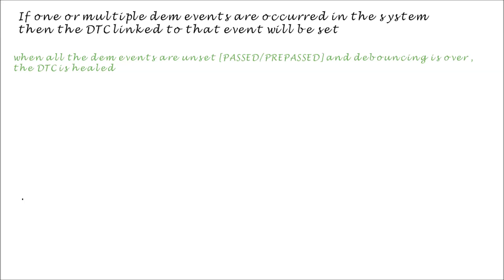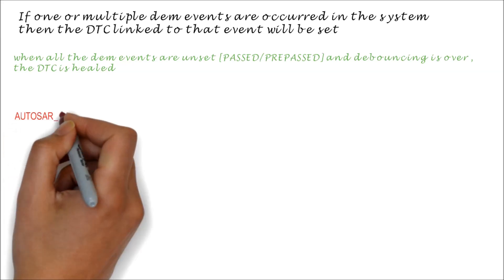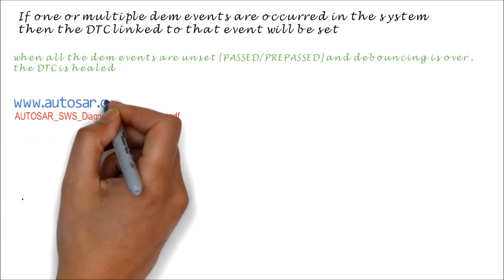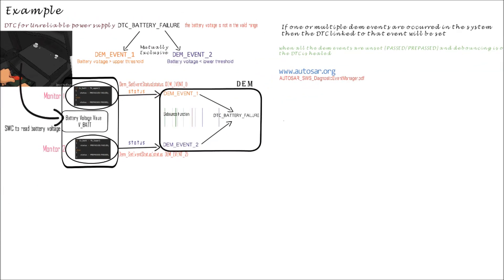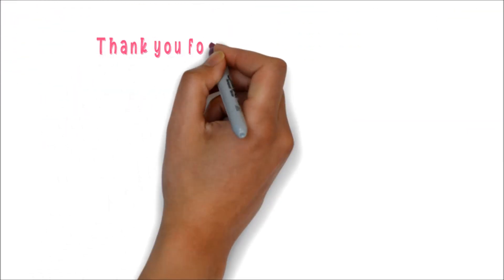The strategies between DEM events and DTCs, including debouncing, come in various types and combinations, which you can understand by going through the DEM specification document from autosar.org. I will not explain the more complex methods in this video as they are out of scope. I hope with this explanation you understood the difference between DEM event and DTC, and got a general idea of the fault handling flow in AUTOSAR compliant ECU software. Thank you for watching.